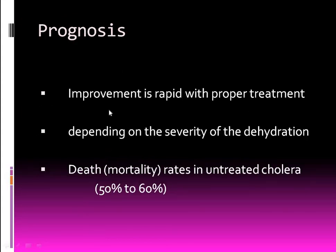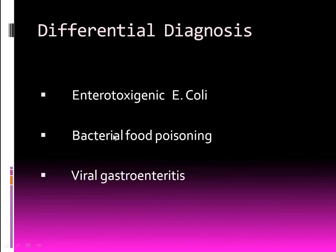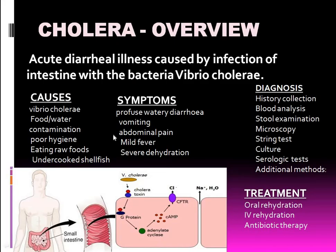Prognosis is very good for mild to moderate patients and depends on severity. The mortality rate is increased in untreated cholera patients. Differential diagnosis includes enterotoxigenic E. coli, bacterial food poisoning, and viral gastroenteritis.